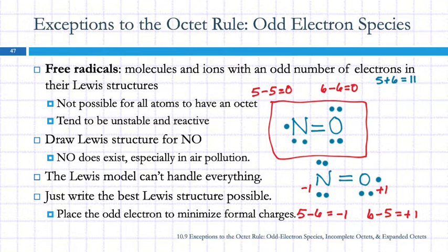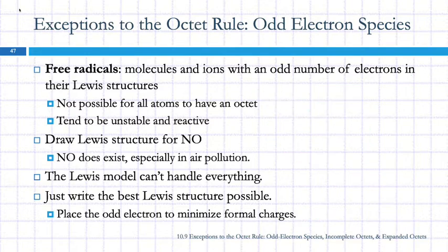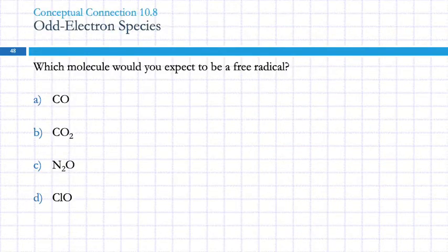So these things happen. Lewis' theory doesn't handle it very well, but it's okay. Which of these atoms would you expect to be a free radical? We can figure this out without drawing Lewis' structures. What was the characteristic of a free radical? Odd number of valence electrons, right?